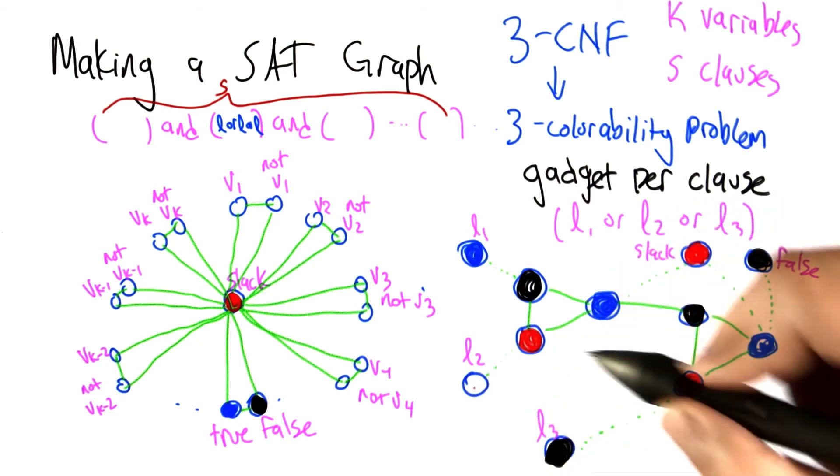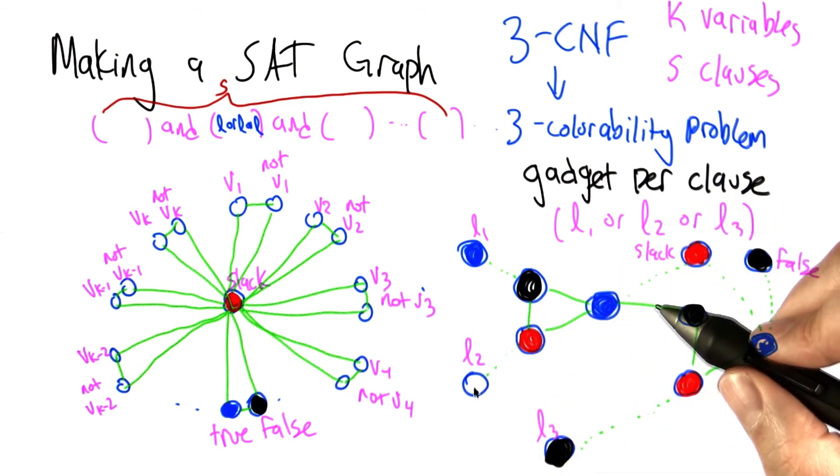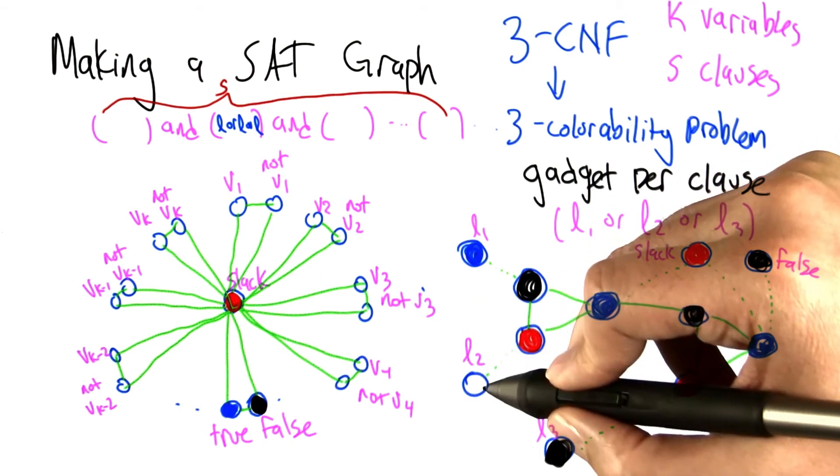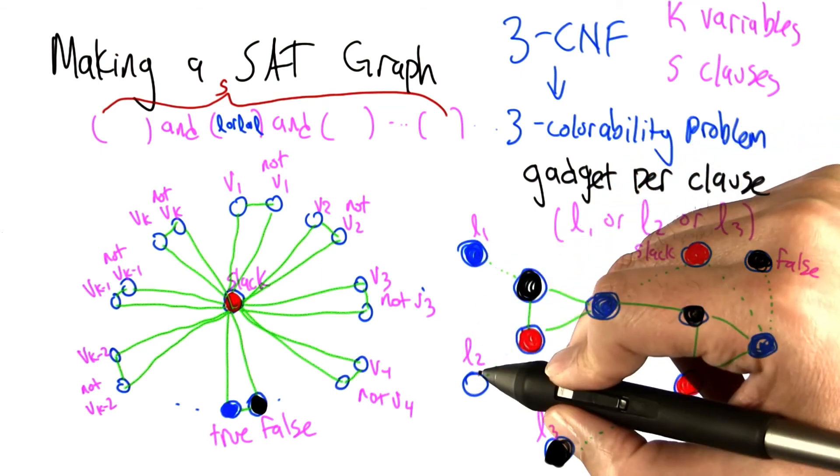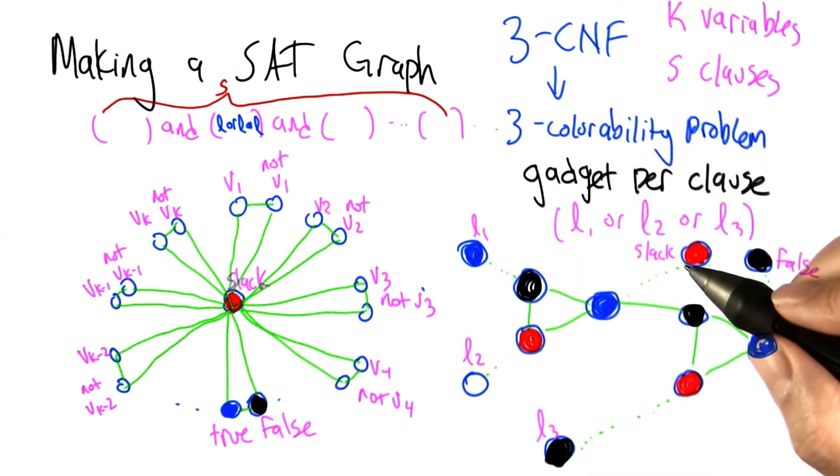Now we're in good shape because this one's black and this one's red, and now we have a valid coloring. Actually, no matter what L2 is colored. And the same argument works if we switch which one of these two is blue, we can just swap these two colors and everything's fine.